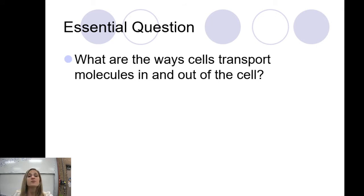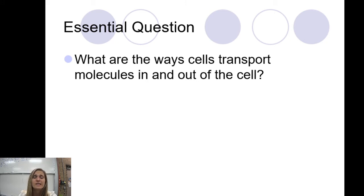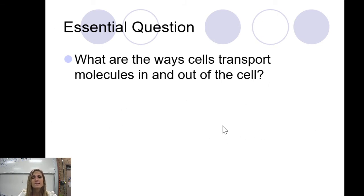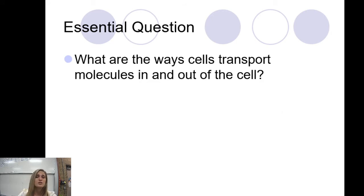Your cell is just like you — it needs certain things in order to maintain homeostasis, to keep balance. So it has to have ways to get things in and to get things out: nutrients in and waste out. That's your essential question; you should write that down.